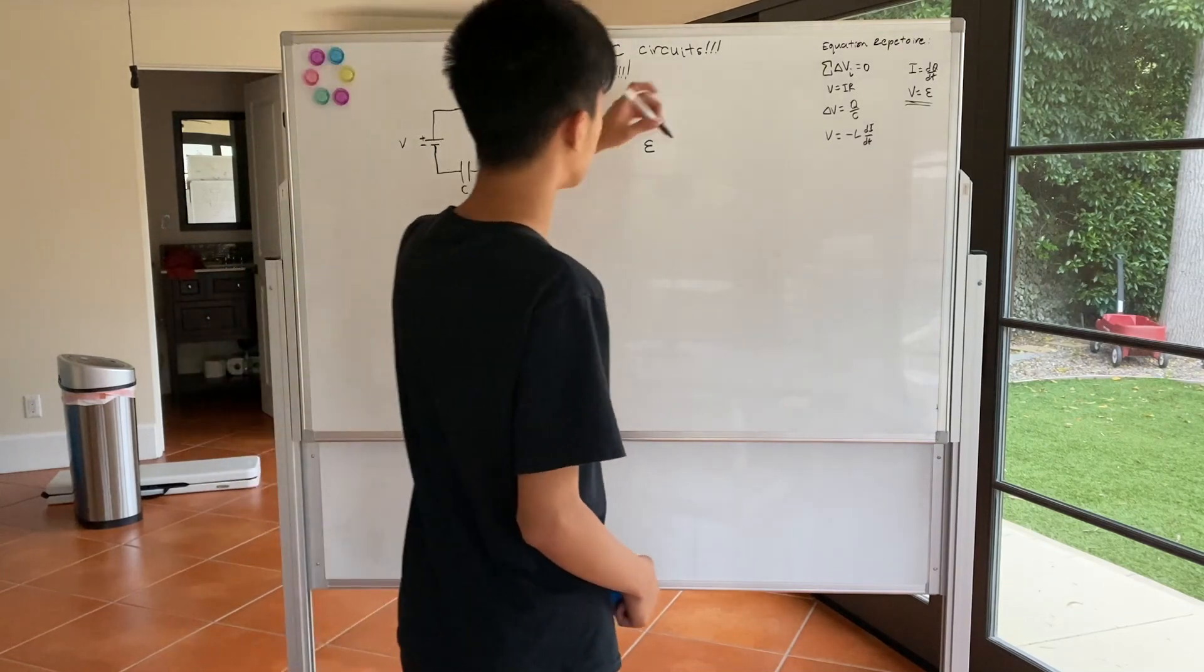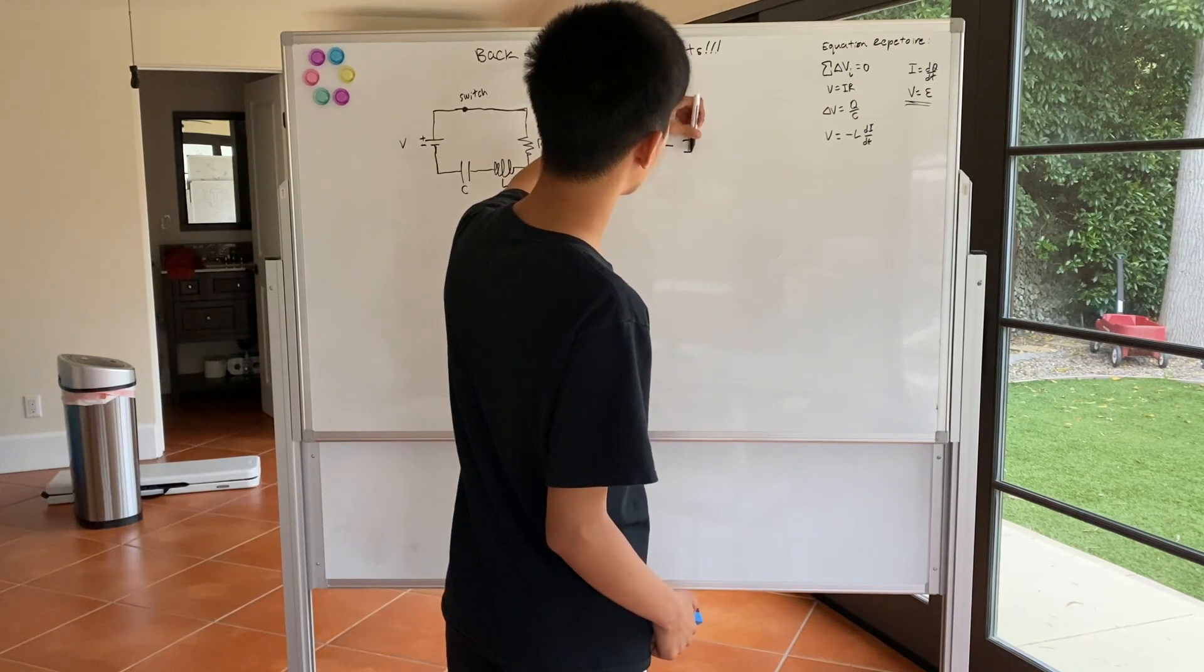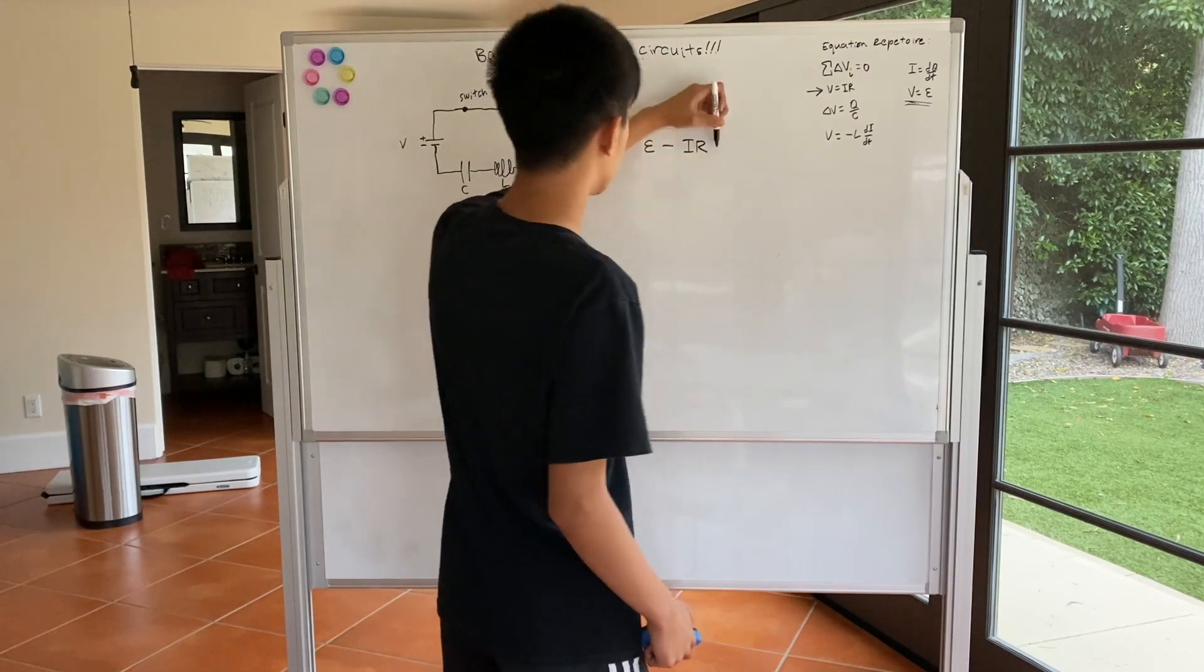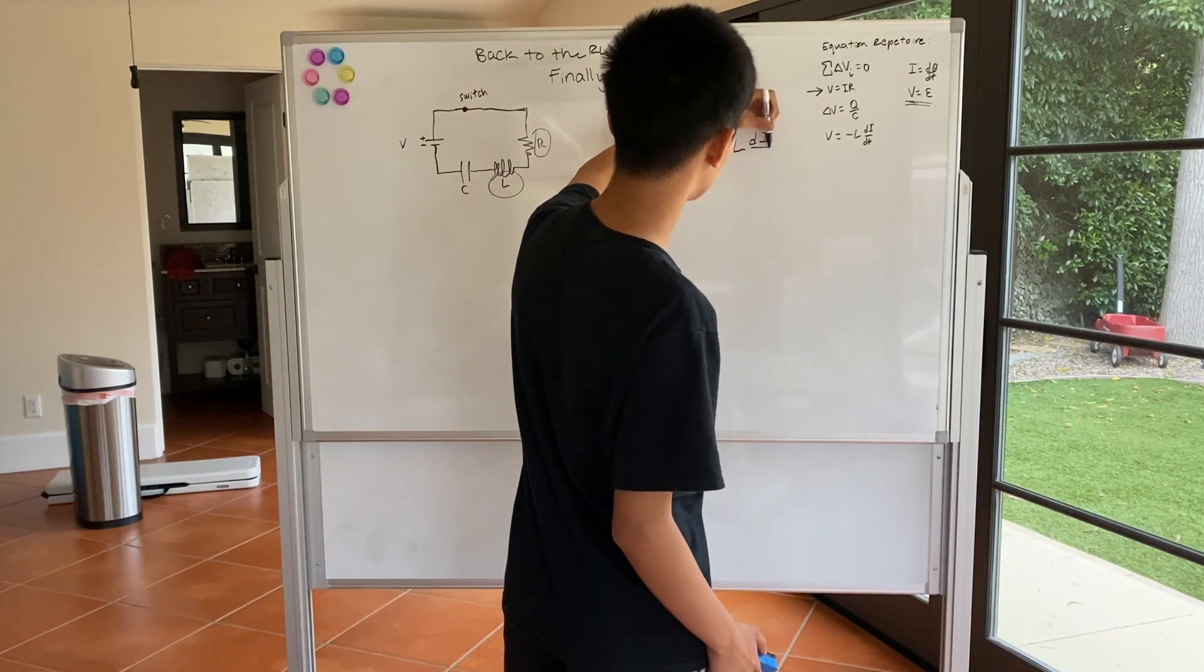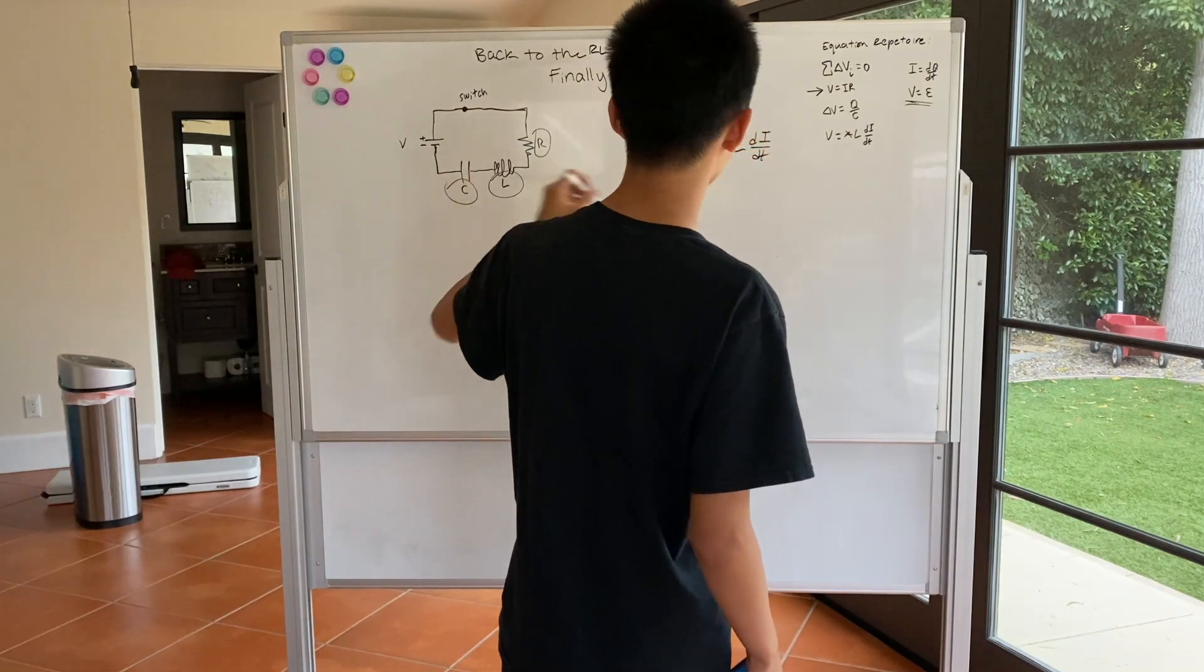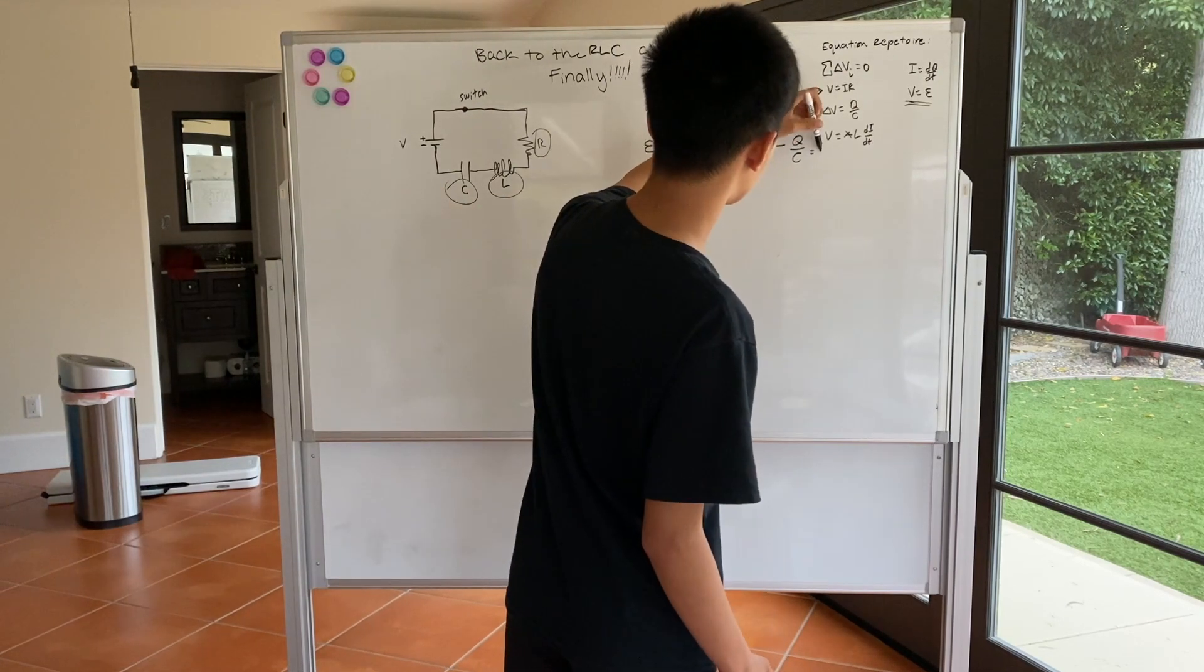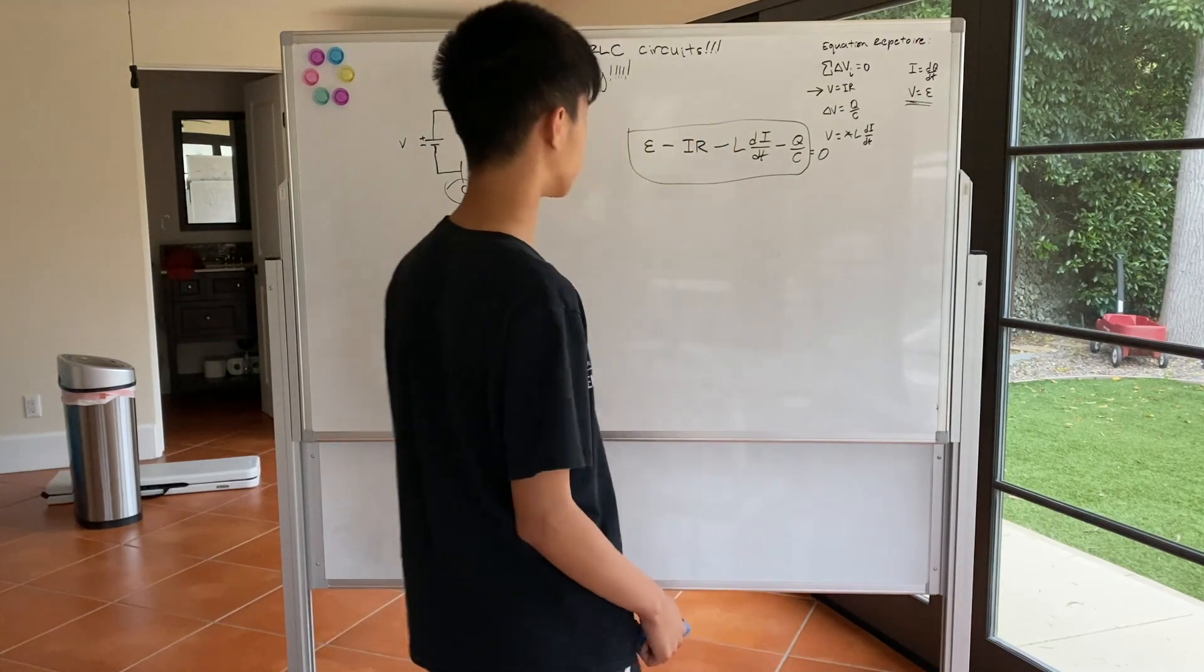So epsilon is the positive change in potential, minus IR from Ohm's Law we have here, minus L di dt. We're just going to ignore the negative sign. Then we have minus Q over C equals zero. So this is what we have to work with so far.